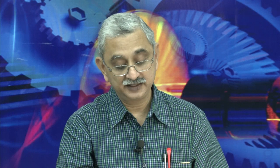In the exercises document, just behind the title page, I have a list of texts and references. I have listed five — this is by no means exhaustive — and these five are my favourites, listed in alphabetical order so as not to give an impression of favouritism. The books are: one by Achyutan, the second by Moran and Shapiro, the third by Sears and Salinger, the fourth by Sontag, Borgnath and Van Vylen, and the fifth by Zimansky. Our steam tables are also listed.